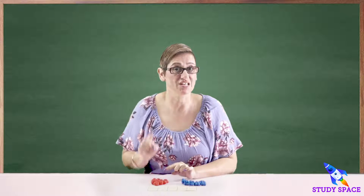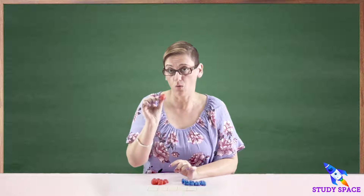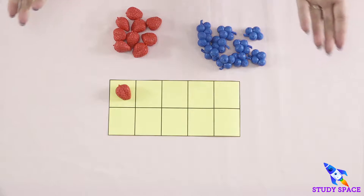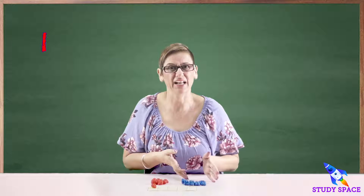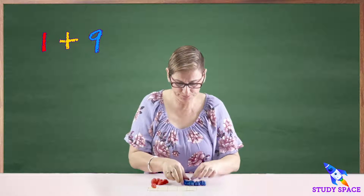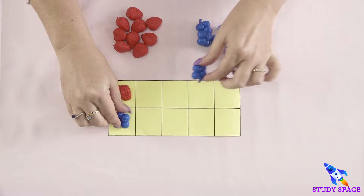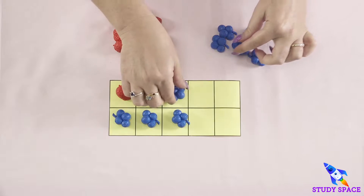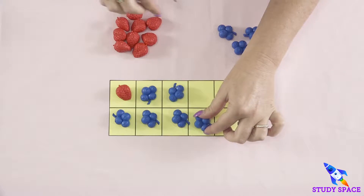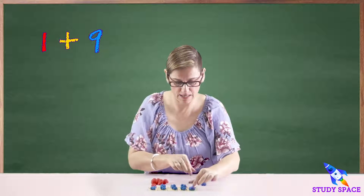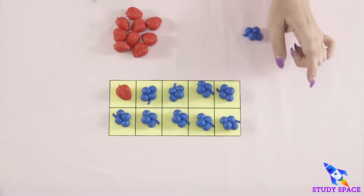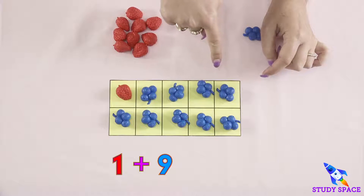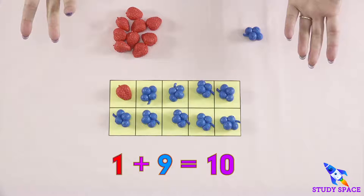Now we need one strawberry — that's one friend. So how many blueberry friends do I need? I'm going to need nine. One, two, three, four, five, six, seven, eight, and nine. So one plus nine — more friends of ten.